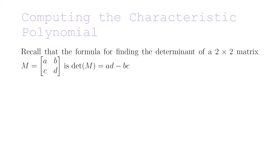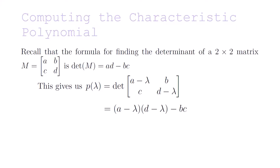Recall that the formula for finding the determinant of a 2x2 matrix M with entries A, B, C, D is determinant of M equals A·D minus B·C. This gives us that P of lambda equals the determinant of the matrix with entries A minus lambda, B, C, and D minus lambda, which gives us A minus lambda times D minus lambda minus B·C.